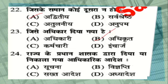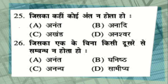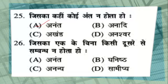Question number 24: राज्य के प्रधान शासक द्वारा दिया गया या निकाला गया आधिकारिक आदेश — options: सूचना, विज्ञप्ति, सख्त आदेश, या अधियादेश. The correct answer is अधियादेश. Question number 25: जिसका कहीं कोई अन्त न होता हो — options: अनन्त, अनादि, अखंड, या अनश्वर. The correct answer is अनन्त. Question number 26: जिसका एक के बिना किसी दूसरे से सम्बंध न होता हो — options: अनन्त, घनिष्ठ, अनन्य, या सामीप्य. The correct answer is option C, अनन्य.